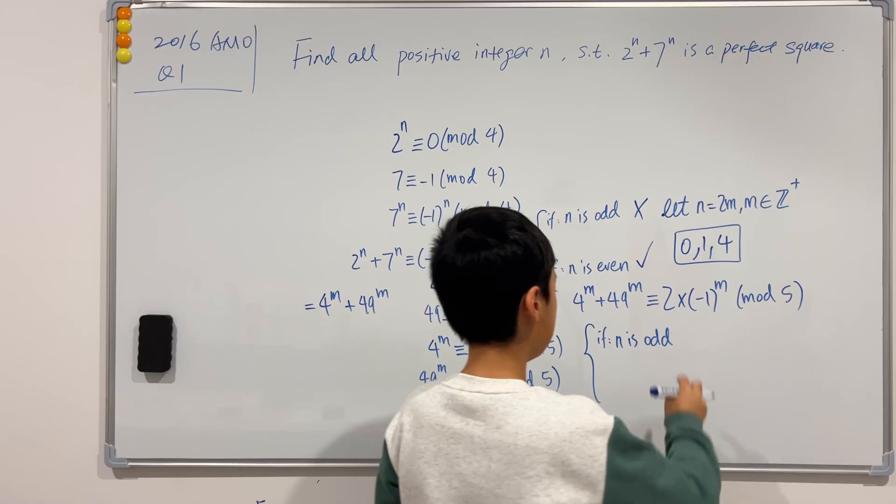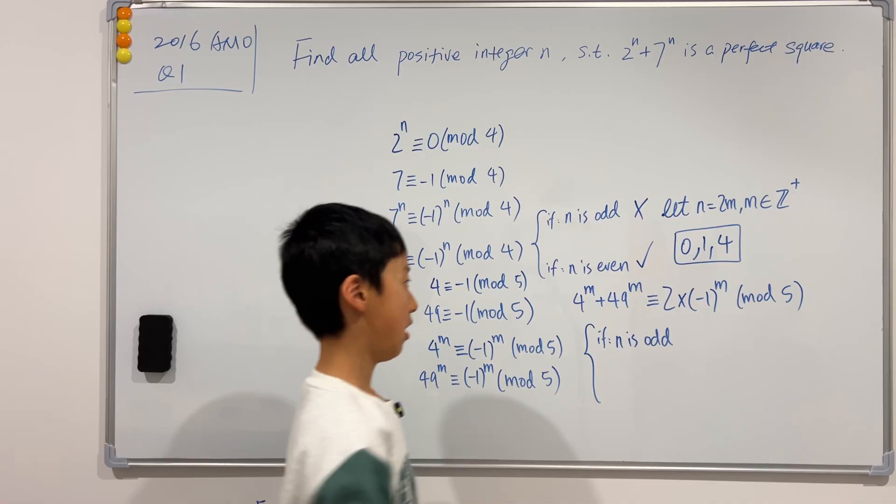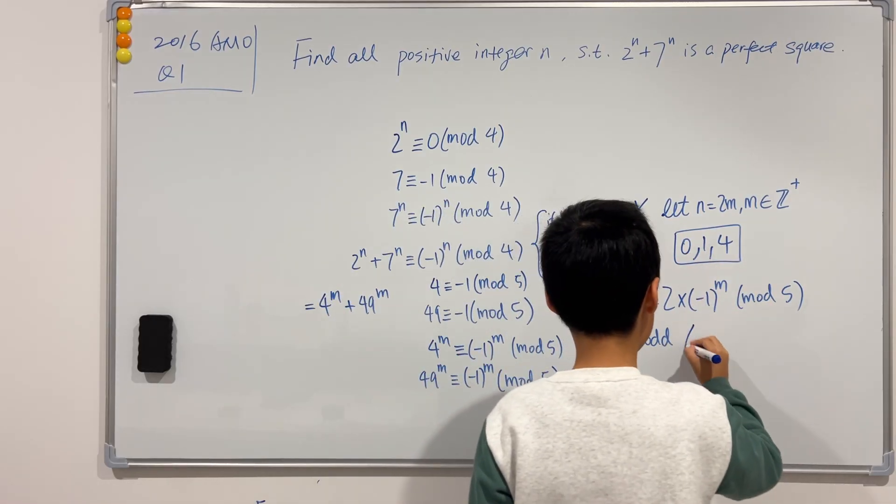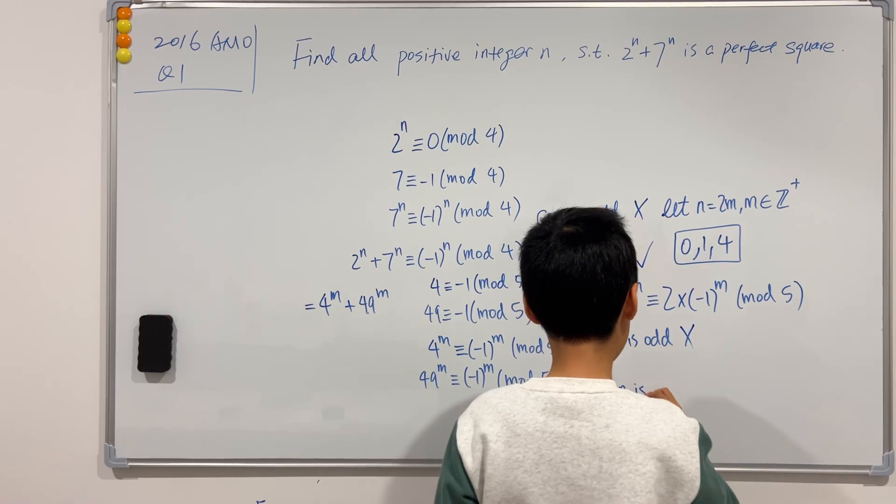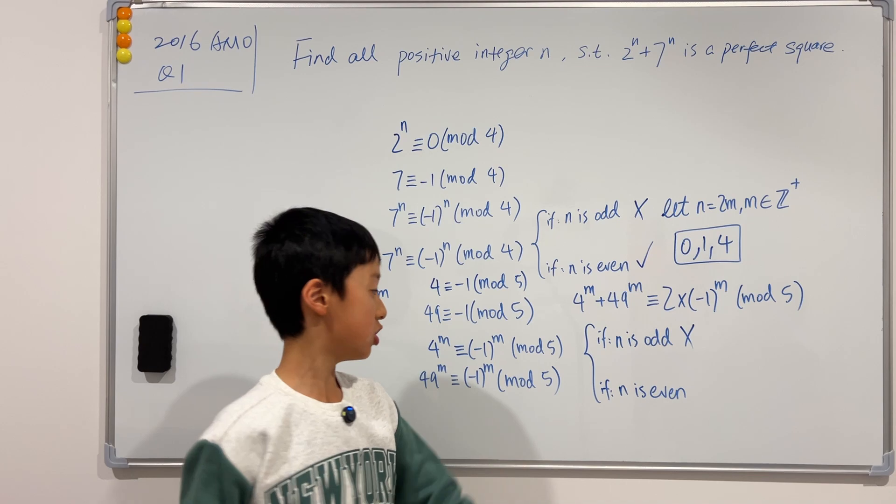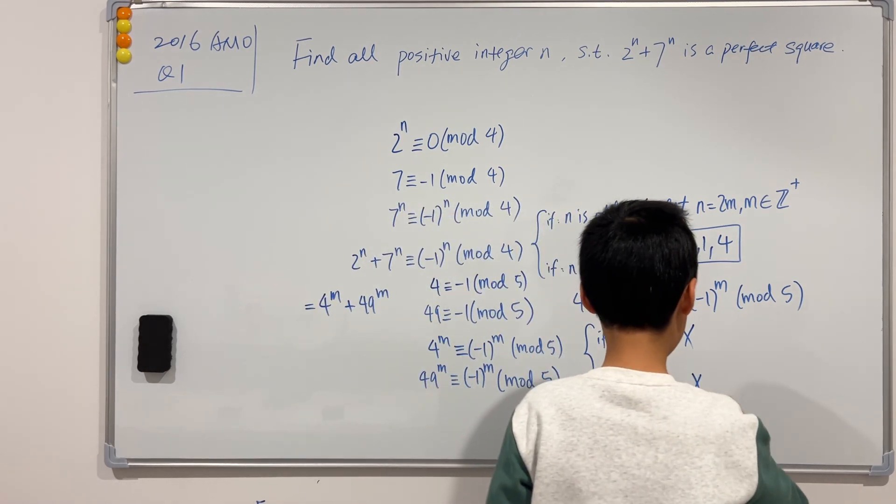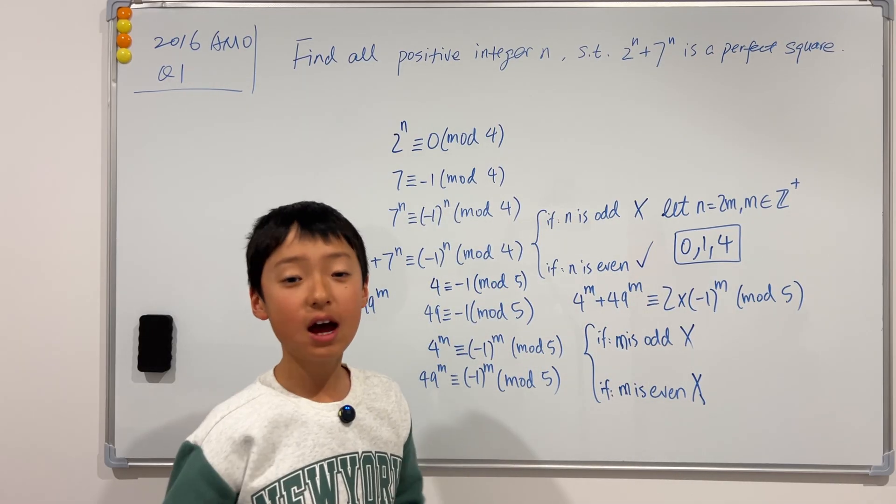So if n is odd. Let's see. When n is odd, this becomes negative 2, which is equivalent to 3. And 3 is not in here. This is wrong. So if n is even, then it becomes 2, which is also not in here. Wrong. Actually, m. So now, we have covered all of the cases where n is greater than 1, and they are actually all wrong.